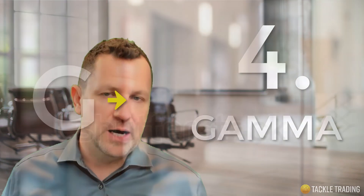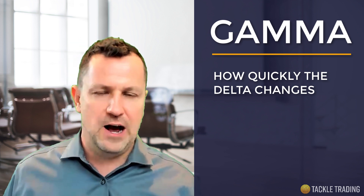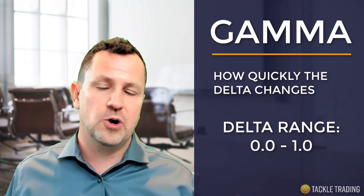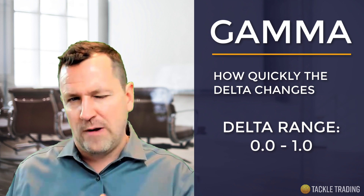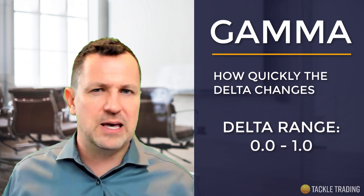The next one is Gamma. There's no fancy memory hook — sorry about that. Gamma is also known as Velocity. Gamma is how quickly the Delta changes. As the stock price moves, an option's Delta can range between 0.0 and 1.0, and at-the-money options have a Delta of about 0.50, so you get about 50 cents on the dollar. Gamma is Velocity — it tells you how the Delta accelerates or decelerates as the stock price moves and the option value changes.